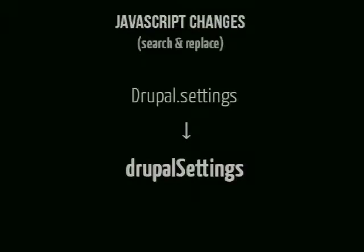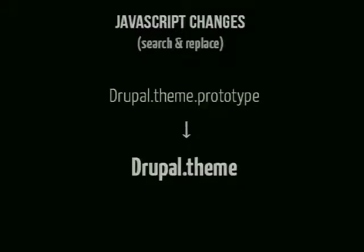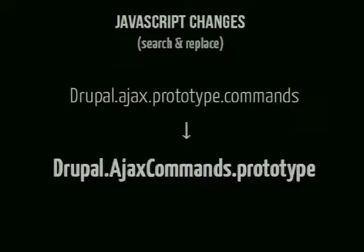The first thing you need to do with your Drupal 7 JavaScript is search and replace. You need to search for Drupal.settings and replace it with drupalSettings — that's the global variable we use in Drupal 8. Second, replace Drupal.jsm.prototype with just Drupal.jsm. A fairly uncommon one: when you implement a custom Ajax callback, it used to be under Drupal.ajax.prototype.command, but now it's under Drupal.ajax.command.prototype. And for the JavaScript, that's all you need to do — your JavaScript will work on Drupal 8.